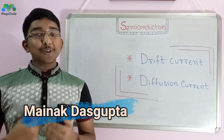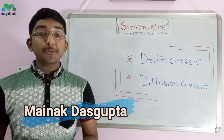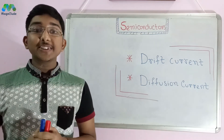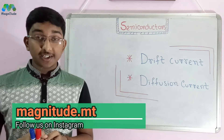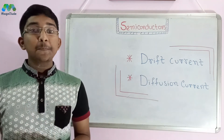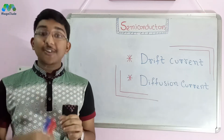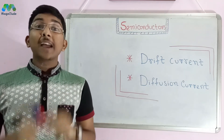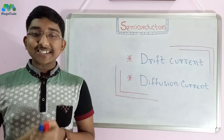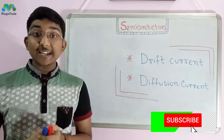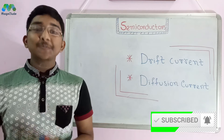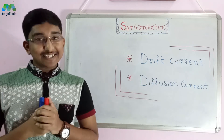Hey everyone, welcome to Magnitude. This is Merak Dasgupta and today we have a new video in the semiconductor series. We are going to discuss drift current and diffusion current — two of the most important concepts for semiconductors. If you haven't watched our previous videos, the link is in the description. If you're new, please subscribe and hit the bell icon. Let's get started.